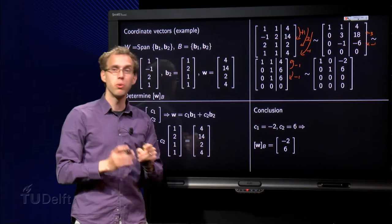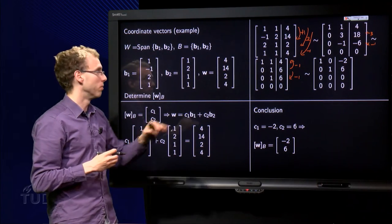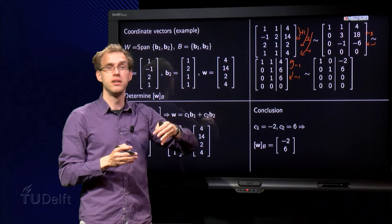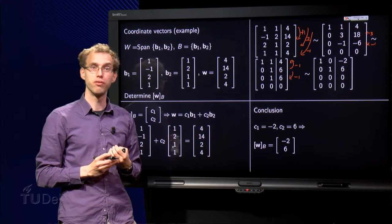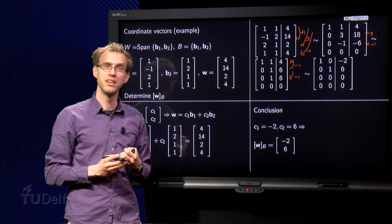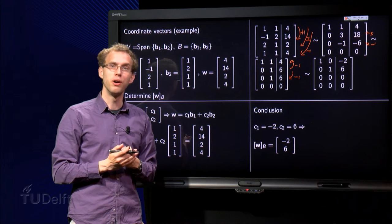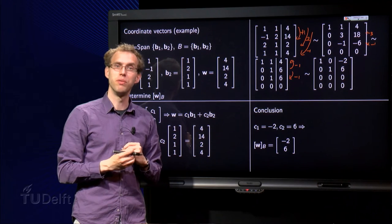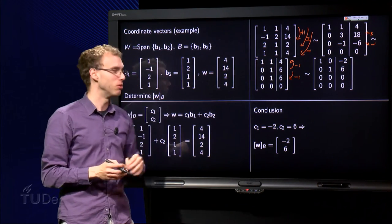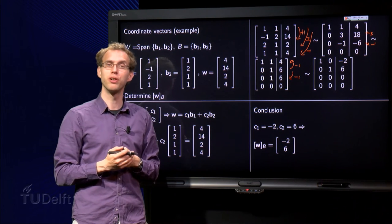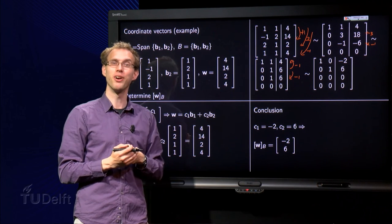Next question: we found one solution, but we did some row reduction over here. Maybe I could have gotten three variables and an infinite number of solutions. Could I? Well, a good question to discuss in the forum below. Would it be possible to get an infinite number of solutions if you are looking for a coordinate vector? I am happy to hear your opinion about that.